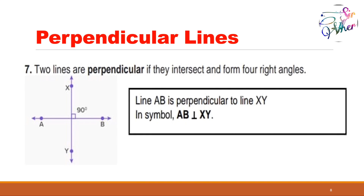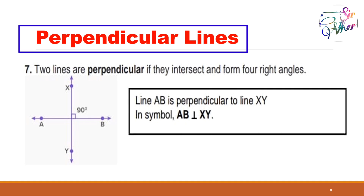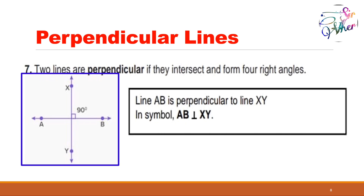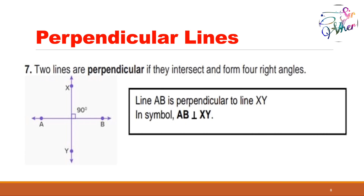For number seven: perpendicular lines. Two lines are perpendicular if when they intersect, they form four right angles. Right angles measure 90 degrees. In the figure, line XY intersects line AB and forms right angles. Since one complete revolution is 360 degrees, and 360 divided by 4 is 90 degrees, all four angles measure 90 degrees. Therefore, line AB is perpendicular to line XY.